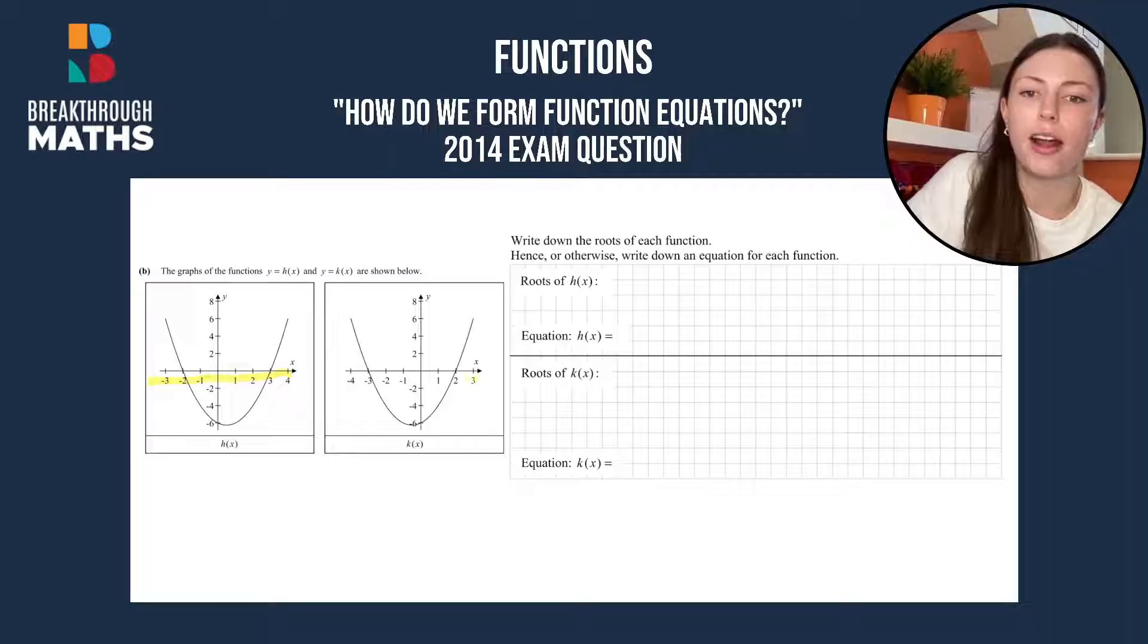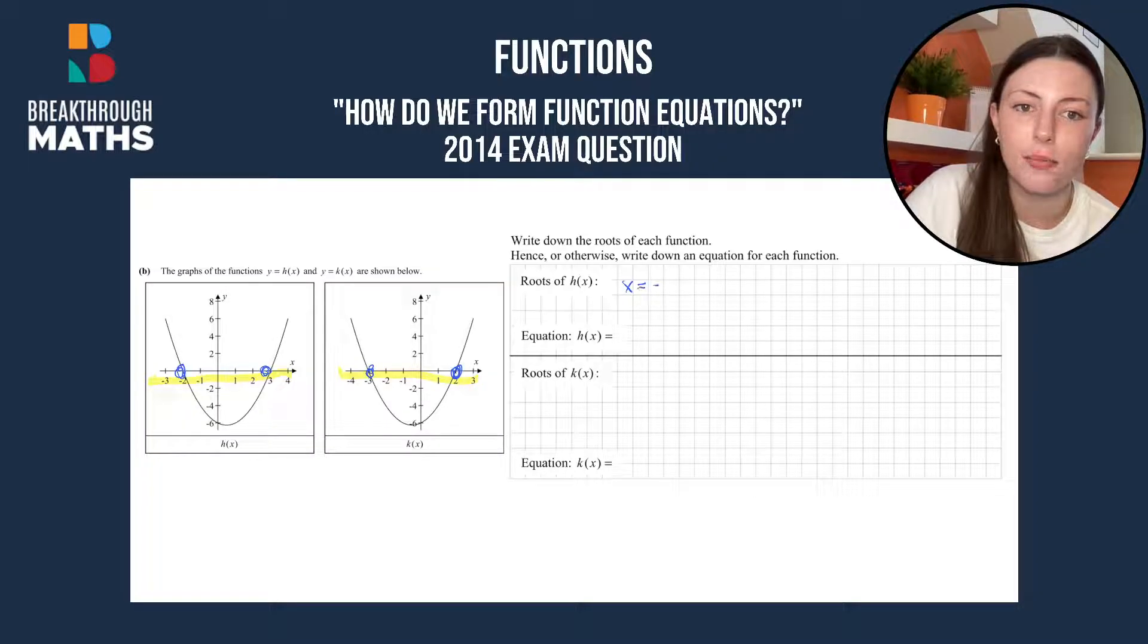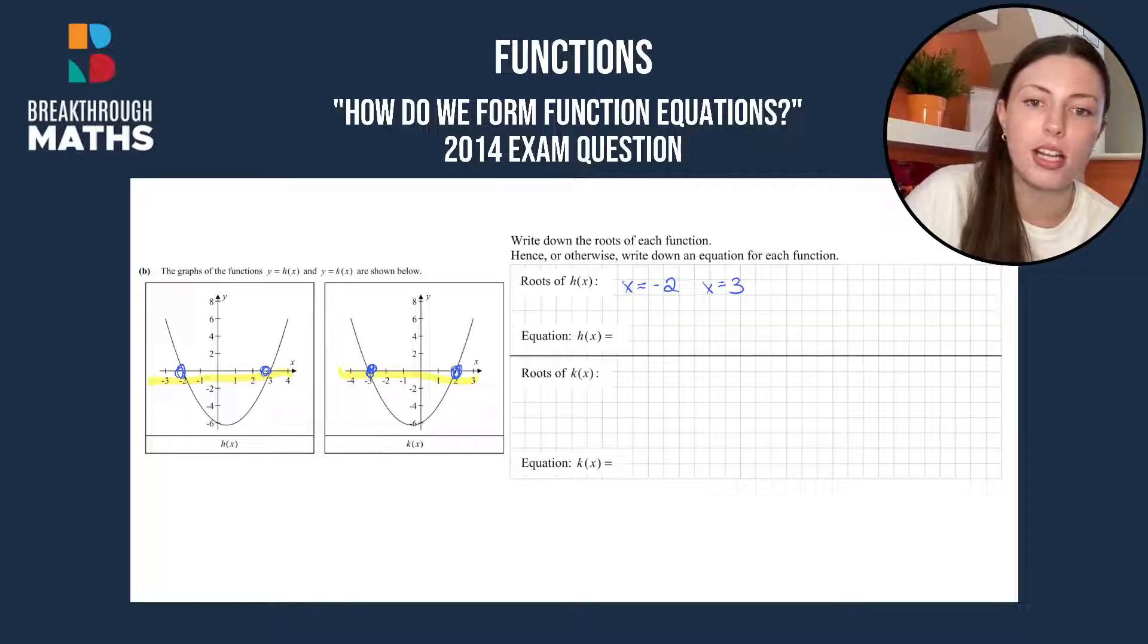We know the roots are wherever a function crosses the x-axis. So we'll mark in where both functions cross the x-axis. For h of x, it's where x equals minus 2 and where x equals 3. And for k of x, it's at minus 3 and plus 2, so where x is minus 3 and where x equals 2.